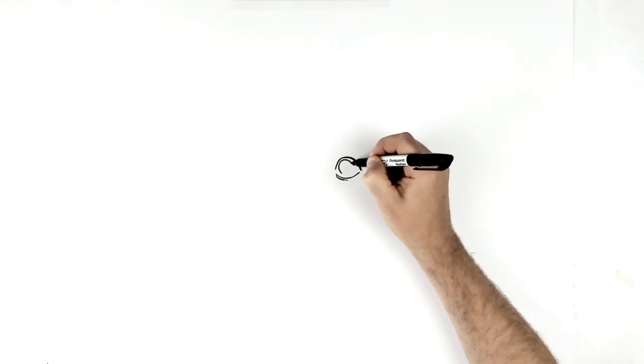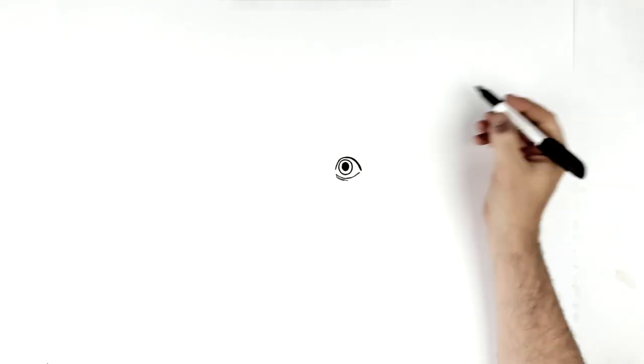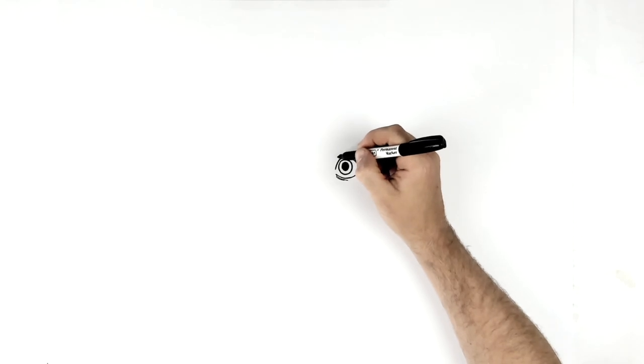His iris inside, so just do a circle. If you have a coin or a compass or something you could draw around, do that, or a stencil for circles works. Then his pupil in the middle, quite big.